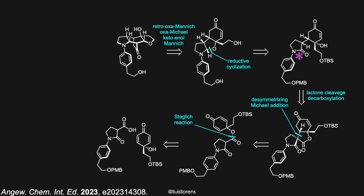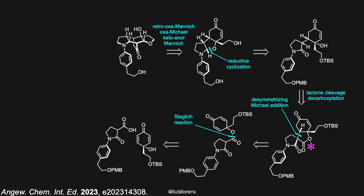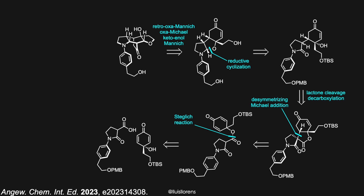The amide group could be accessed from this spirocycle by selective cleavage of the lactone and decarboxylation of the resultant carboxylate. The spirocycle was generated by an enantio- and diastereoselective Michael addition from a racemic dienone that could be disconnected back to two simple fragments: an iodo-substituted cyclohexadienone and this malonate-amide acid.